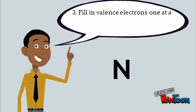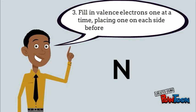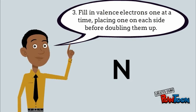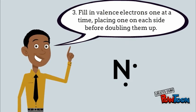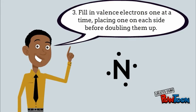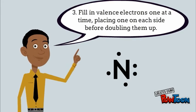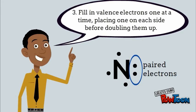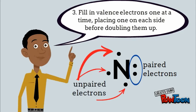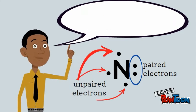The final step is to fill in the valence electrons one at a time, placing one on each side before doubling them up. So we're going to start here on the right and work clockwise. So there's one, two, three, four, and then we're going to double up on the right with five. So here we have two paired electrons on the right and three unpaired electrons on the top, left, and bottom.